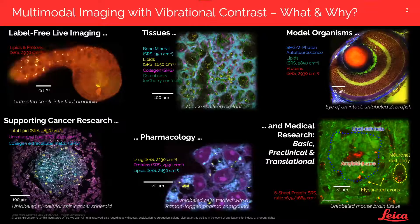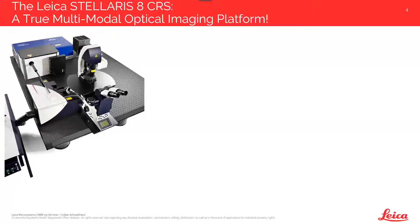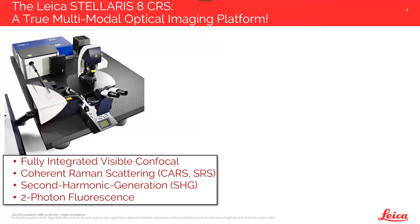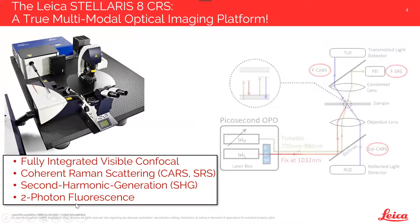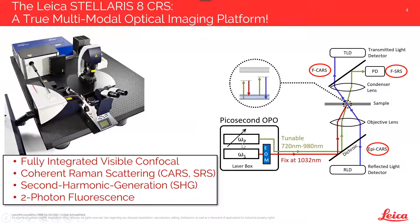The instrument we use is a regular confocal — the Stellaris confocal microscopy platform — with an additional laser source, an OPO that enables the coherent Raman scattering modalities. This gives a fully integrated visible confocal with CARS and SRS imaging capabilities, and in parallel we can acquire second harmonic generation and multi-photon fluorescence signals.